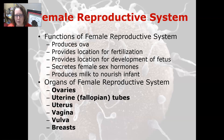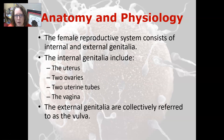The female reproductive system also produces milk to nourish the infants. The organs of the female reproductive system are the ovaries, the uterine tubes (also known as fallopian tubes), the uterus, the vagina, vulva, and the breasts. The system consists of internal and external genitalia. The internal genitalia include the uterus, ovaries, two uterine tubes, and the vagina. The external genitalia are collectively referred to as the vulva.